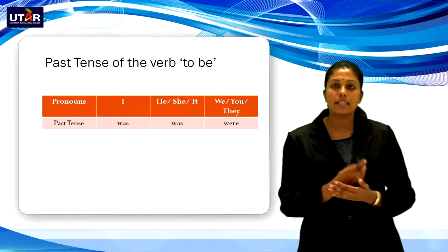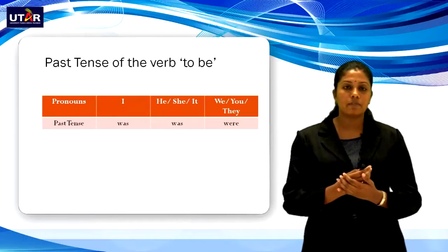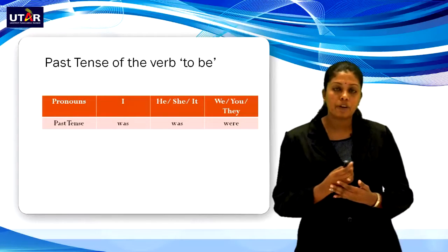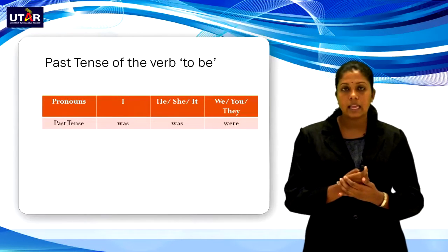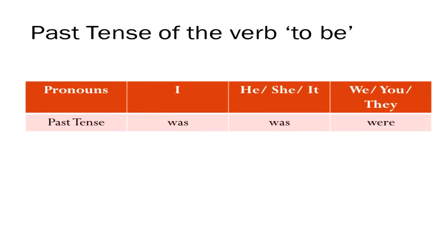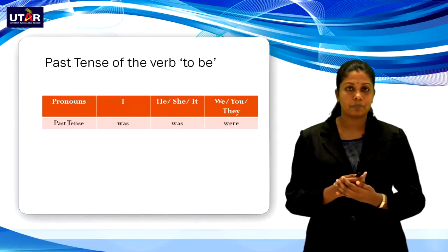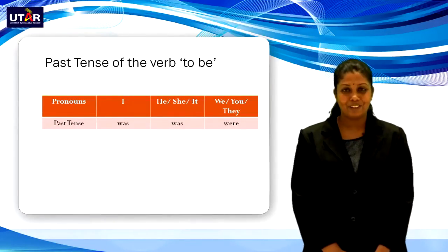Now let's look at the past tense of the verb to be. For the pronoun I, you use was. For he, she, it — singular subjects — you use was. And for we, you, and they, we use were. Thank you.